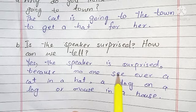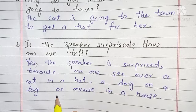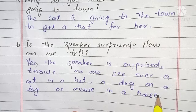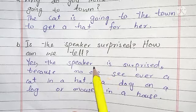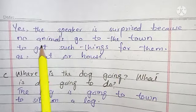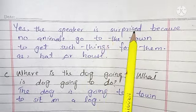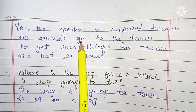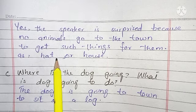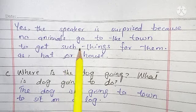The cat is going to town to get a hat for her. Yes, the speaker is surprised because no one ever saw a cat in a hat, a dog on a log, or a mouse in a house. We can also write the answer like this: Yes, the speaker is surprised because no animals go to town to get such things for themselves, such as a hat or a house — کوئی بھی جانور قصبے میں نہیں جاتا اپنے لئے چیزیں حاصل کرنے۔